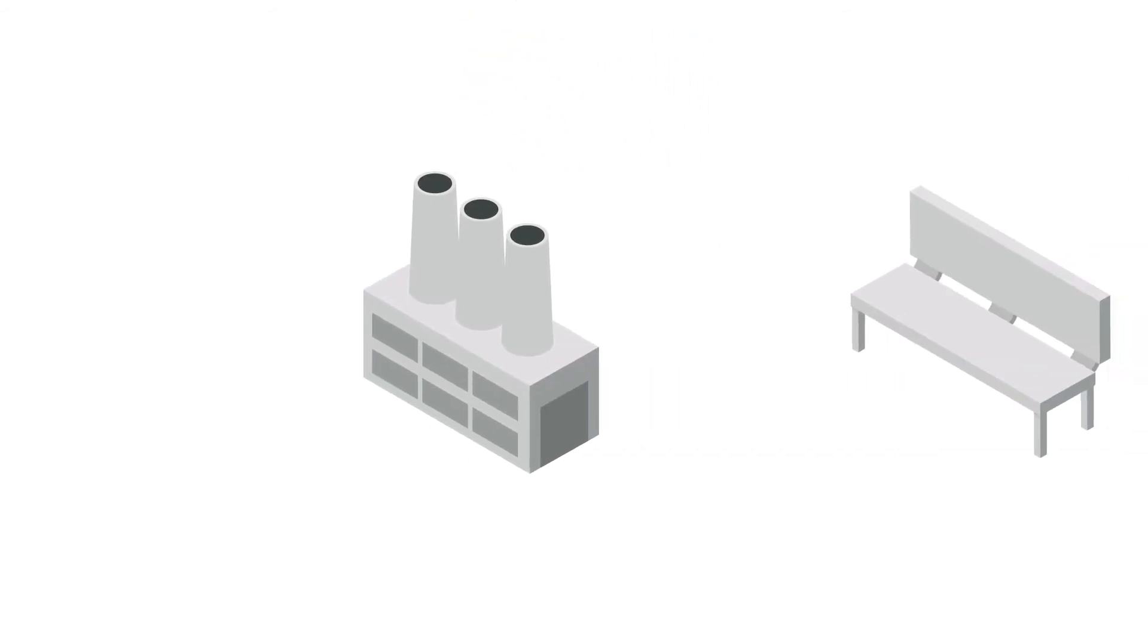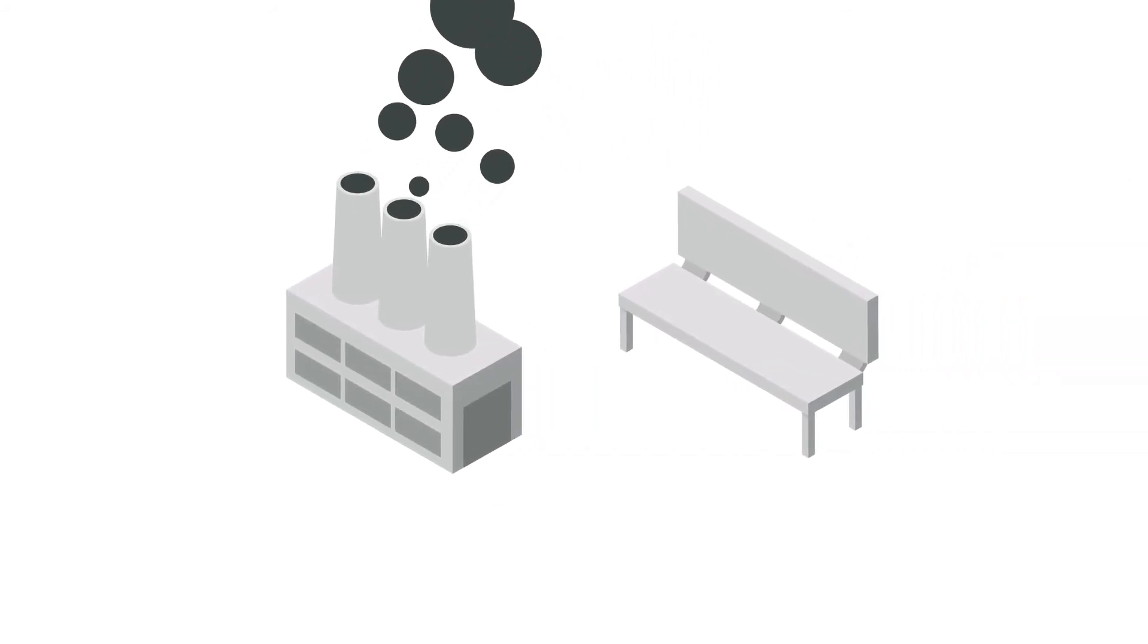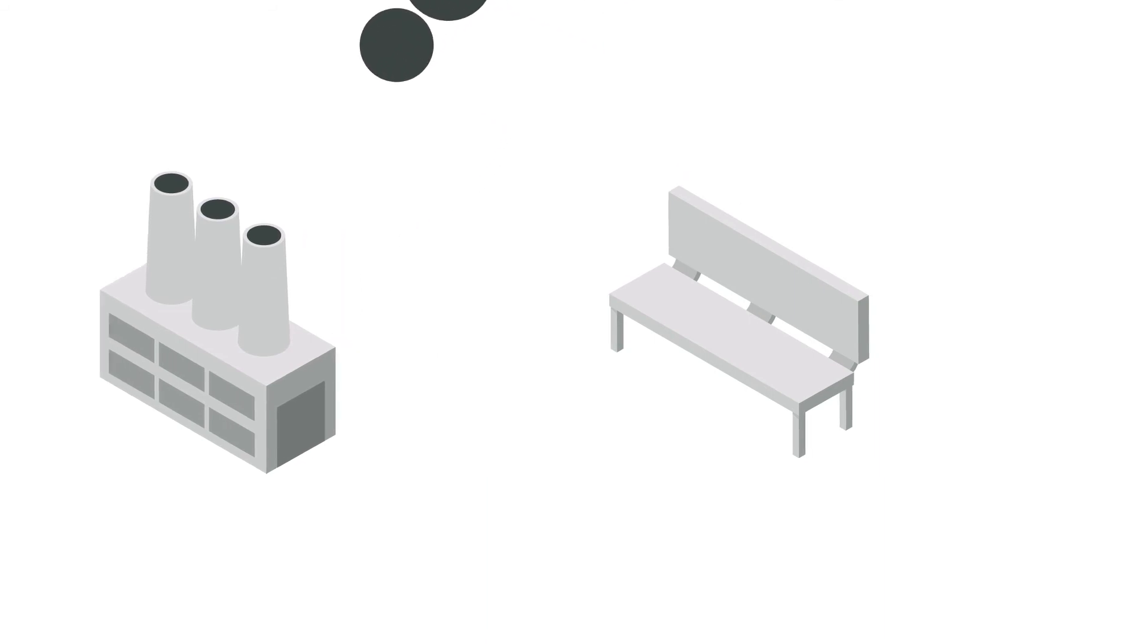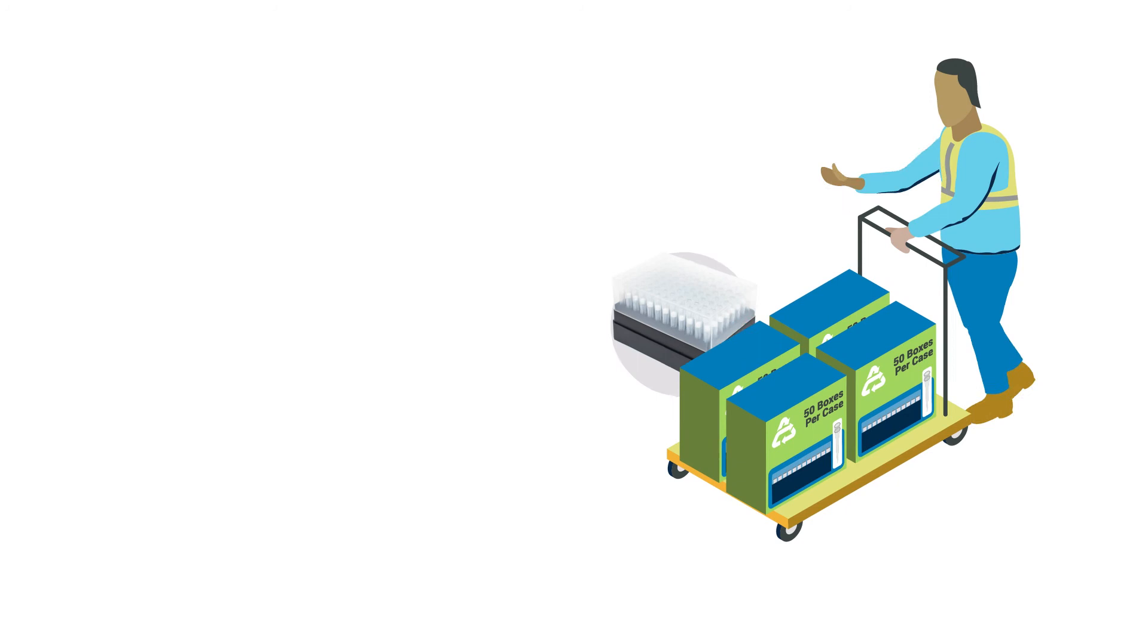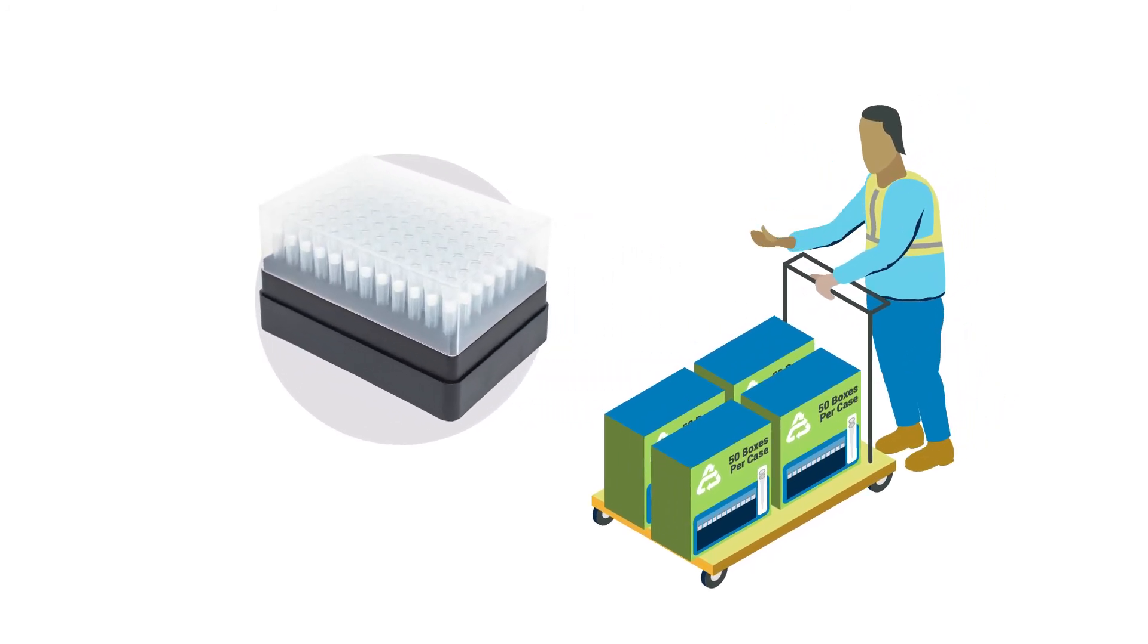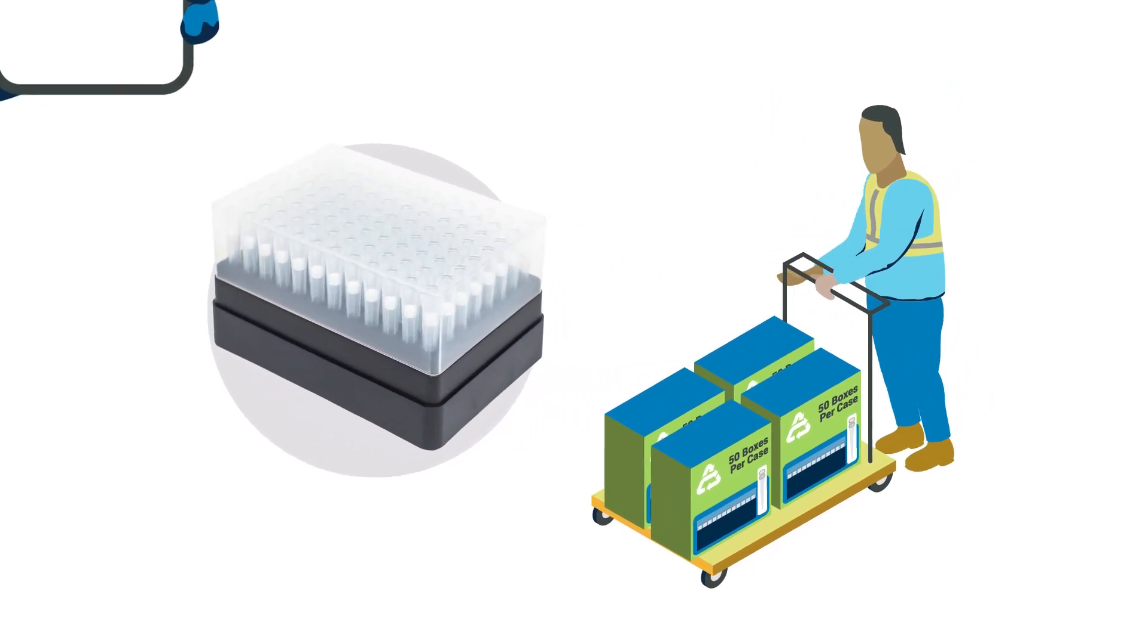Instead of this material going into an incinerator or another park bench, Polycarbin will use this valuable plastic to remanufacture circular economy pipette tip boxes to be recycled time and time again.